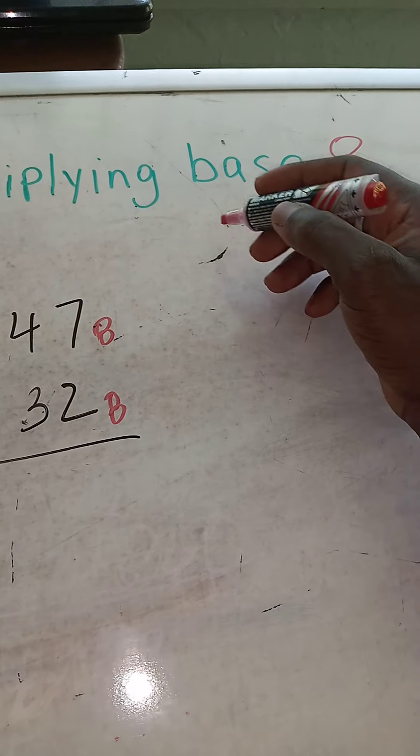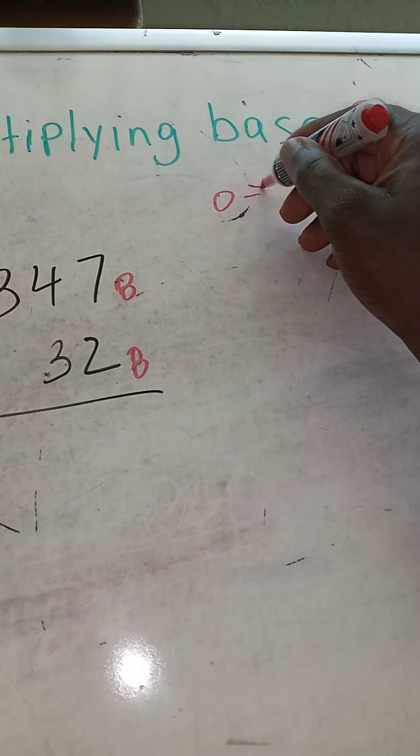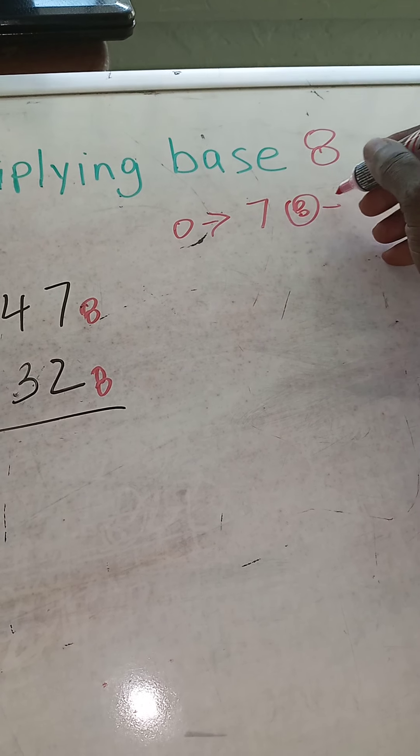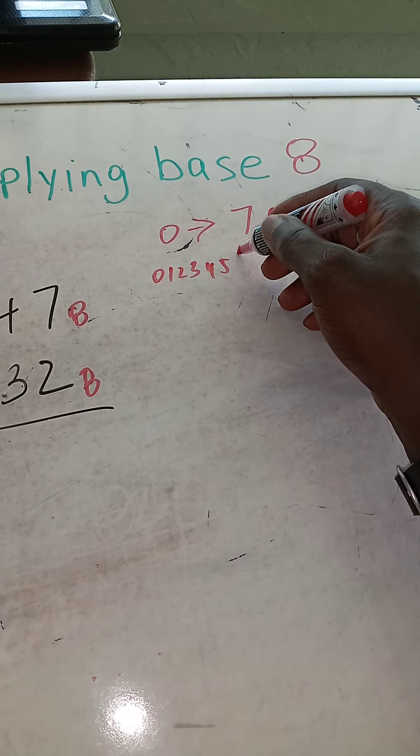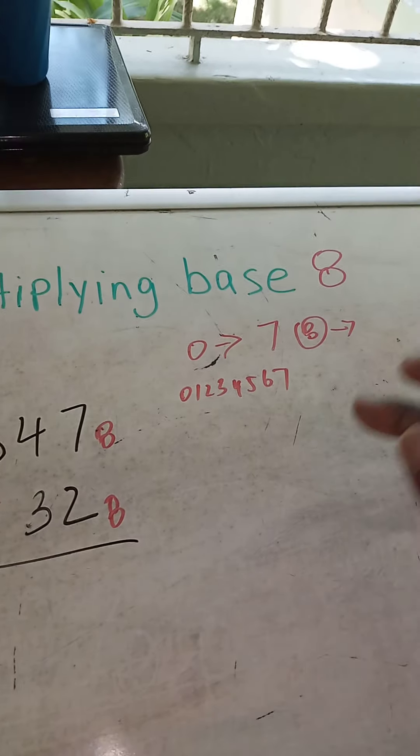Another concept is that you don't write a number which is the same value as the base, but you can write any number between 0 and 7, not above it. So you can write 0, 1, 2, 3, 4, 5, 6, and 7. I can't write 8 or any number above it.